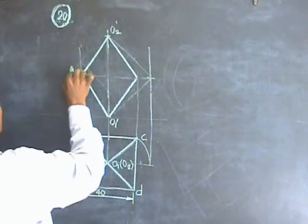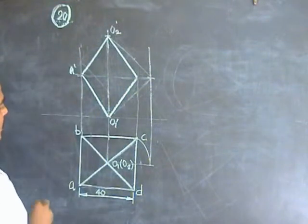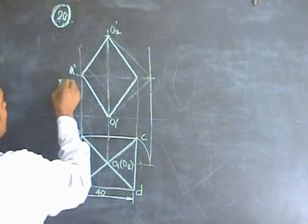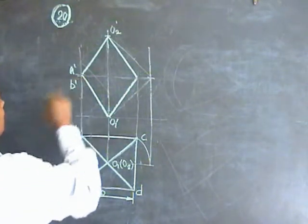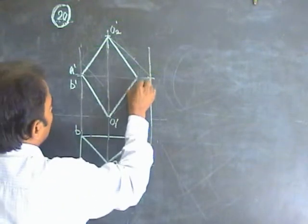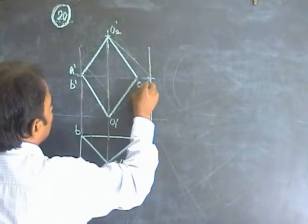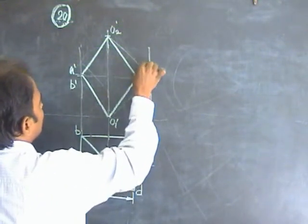A dash is visible, B dash is not visible, C dash is not visible, D dash is visible.